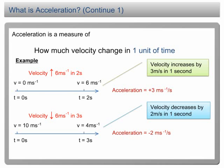Let's look at another example. Initially, the velocity is 10 m per second. It drops to 4 m per second in 3 seconds. The velocity decreases by 6 m per second in 3 seconds or 2 m per second in 1 second. So, what is the acceleration? The acceleration is negative 2 m per second per second.